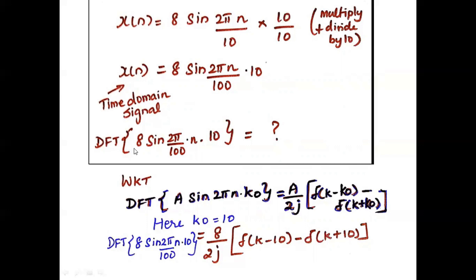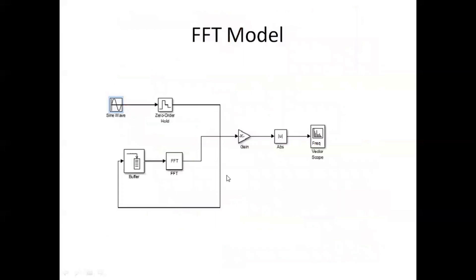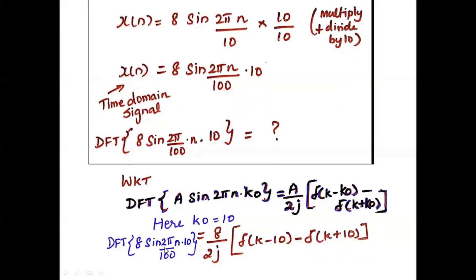We have to find the DFT of this signal. We know that DFT of A·sin(2π·n·k₀) = (A/2j)[δ(k − k₀) − δ(k + k₀)]. In this expression, k₀ is 10. So the DFT of sin(2π/100·n·10) equals A/2j, where A = 8, giving (8/2j)[δ(k − 10) − δ(k + 10)]. This implementation we will study with the FFT model.